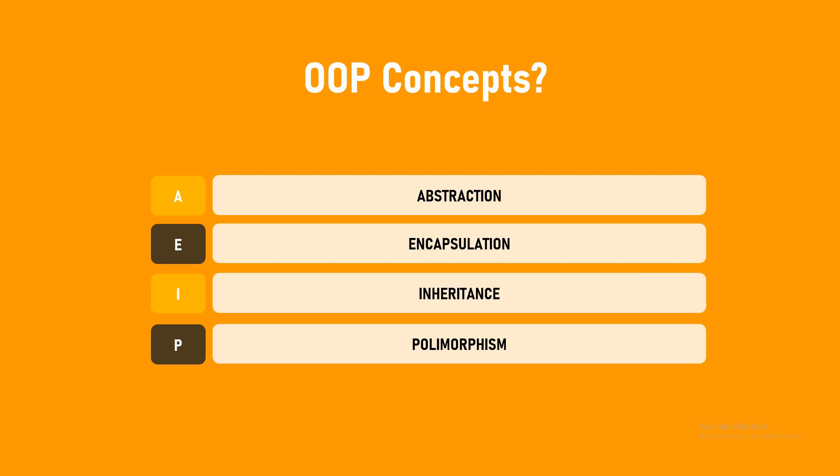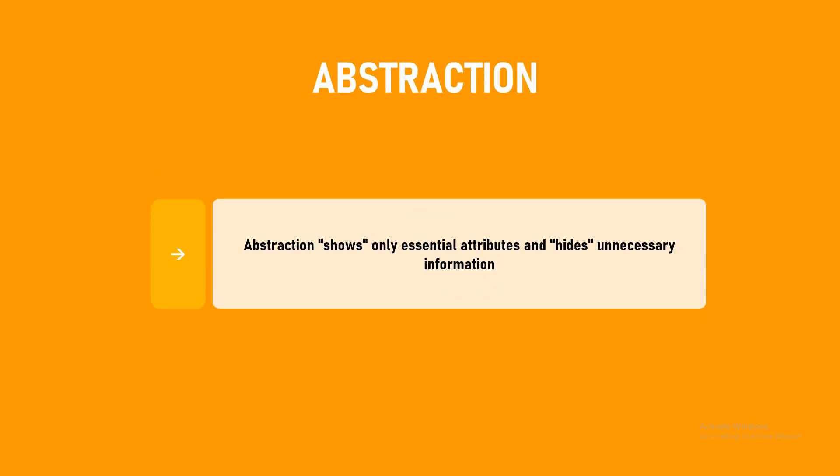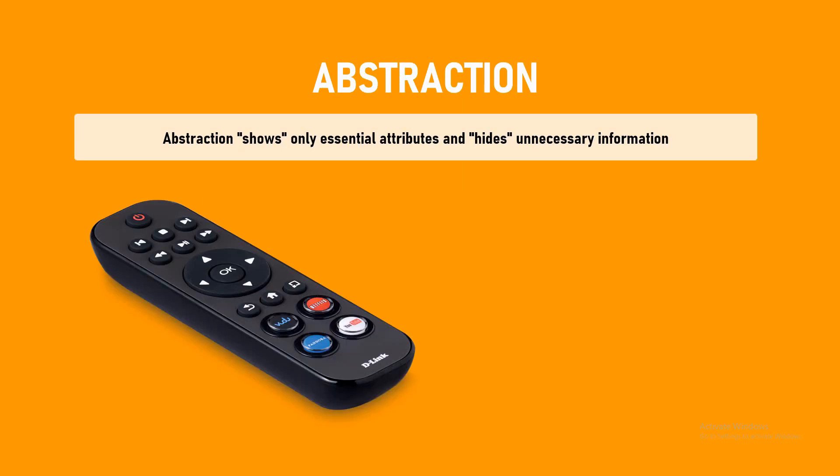Let's see what exactly abstraction is. The definition says: abstraction shows only essential attributes and hides unnecessary information. What does that mean? Consider a remote control.